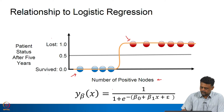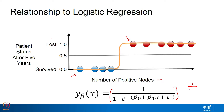Remember, if you take the logistic function and the argument becomes 0, then it is 1 over 1 plus 1, which is 0.5. That is the threshold point. For all arguments greater than 0, the logistic function outputs a value greater than 0.5, and for all arguments less than 0, the logistic function outputs less than 0.5. So we classify that as either class 1 or class 0.